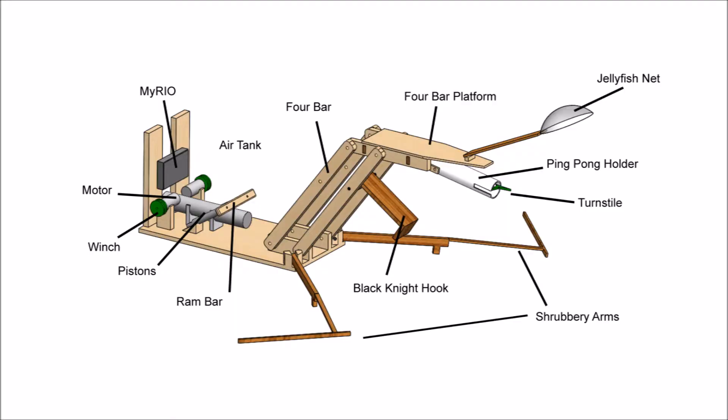Under box number 4 is the 4-bar design. The most notable part of this design is how the aspects of it extend from the platform, which acts as a stable base so the machine can complete the objectives. It is activated with two pistons connected by a ram bar, which pushes the arm of the 4 bars forward.